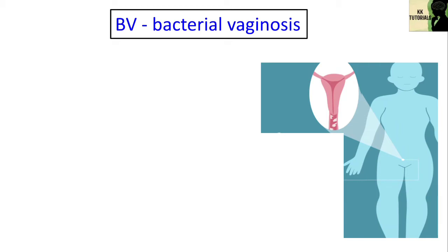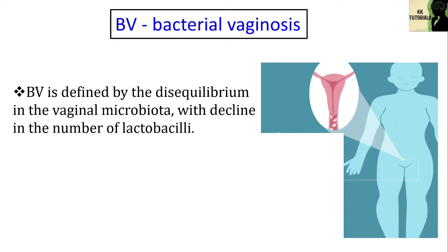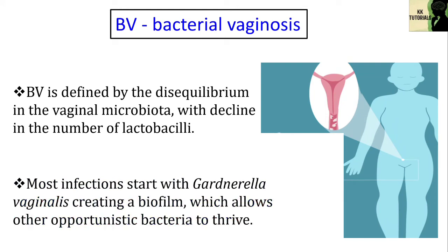Bacterial vaginosis is a common vaginal infection that happens when some normal bacteria that live in the vagina overgrow, causing a bacterial imbalance. Bacterial vaginosis is the most common vaginal problem for women ages 15 to 44. BV is defined by the disequilibrium in the vaginal microbiota with a decline in the number of lactobacilli. While the infection involves a number of bacteria, it is believed that most infections start with Gardnerella vaginalis creating a biofilm which allows other opportunistic bacteria to thrive.